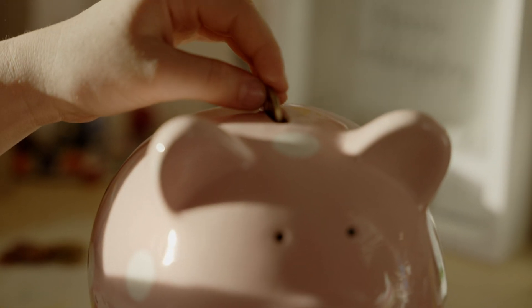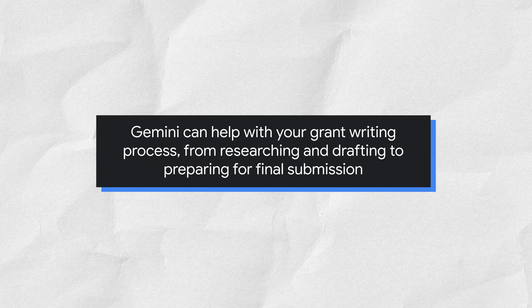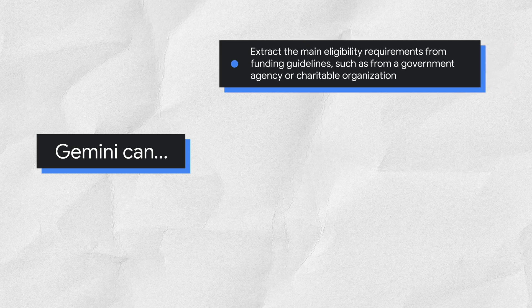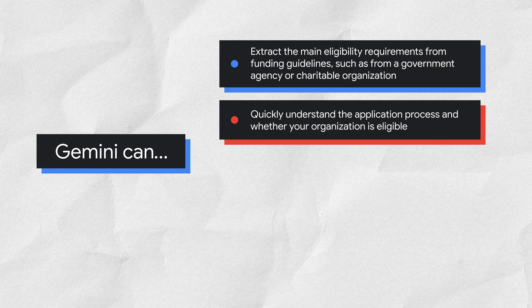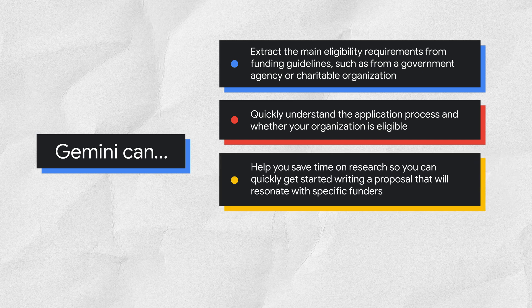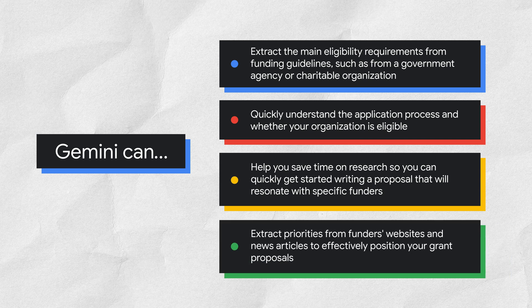Now let's shift to how Gemini can help your organization fundraise. Gemini can help with your grant writing process, from researching and drafting to preparing for final submission. Gemini can extract the main eligibility requirements from long or complex funding guidelines, such as from a government agency or charitable organization, helping you quickly understand the application process and whether your organization is eligible. Make sure to include the URL to the grant in your prompt. Gemini can also help you save time on research by extracting priorities from funders' websites and news articles to effectively position your grant proposals.